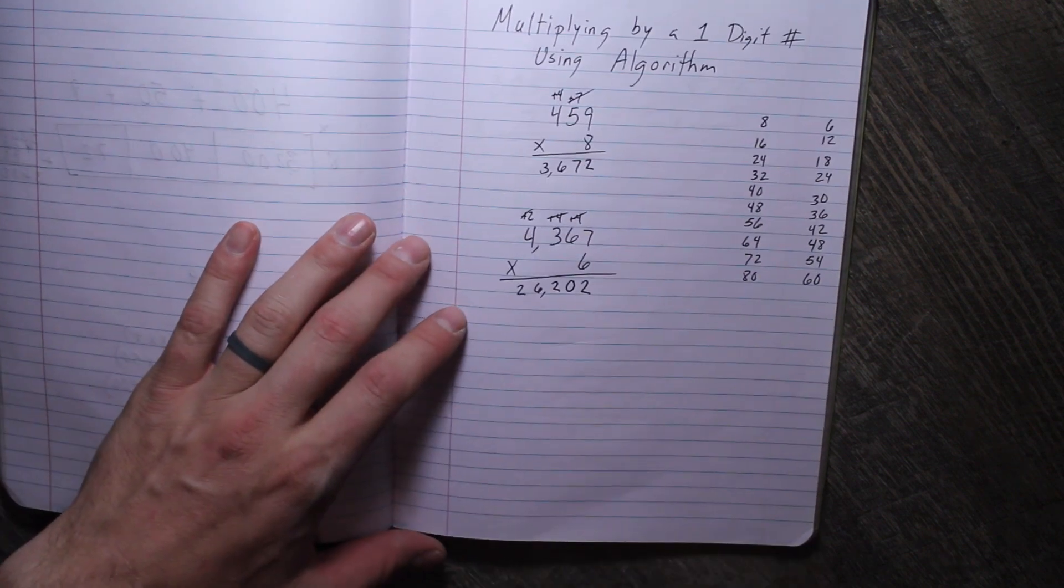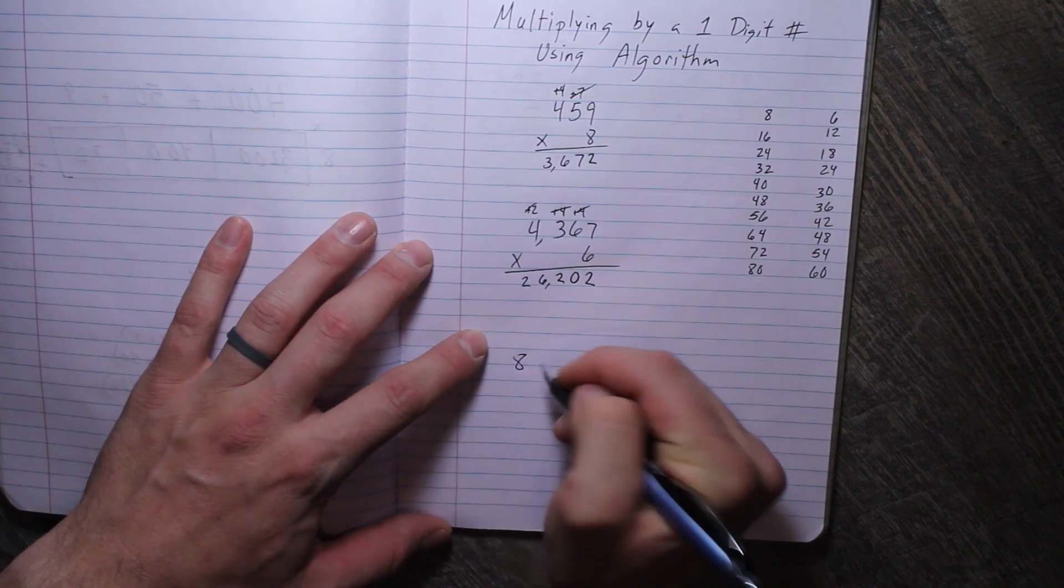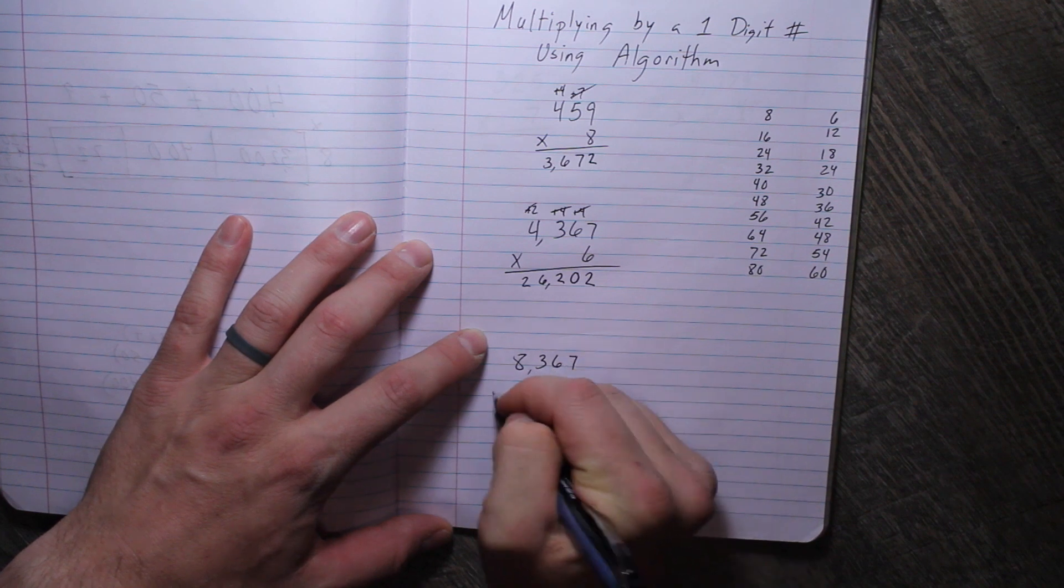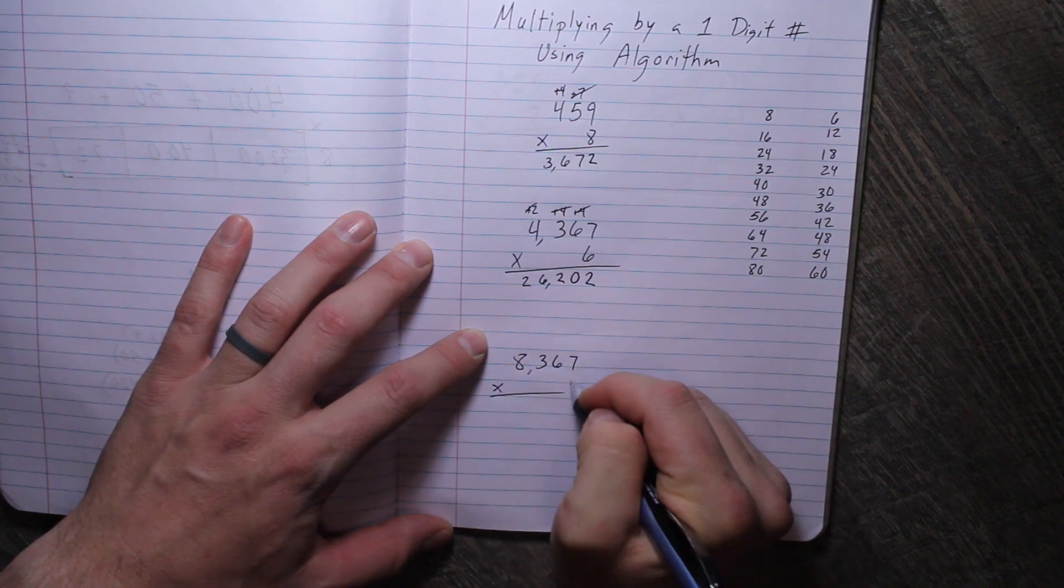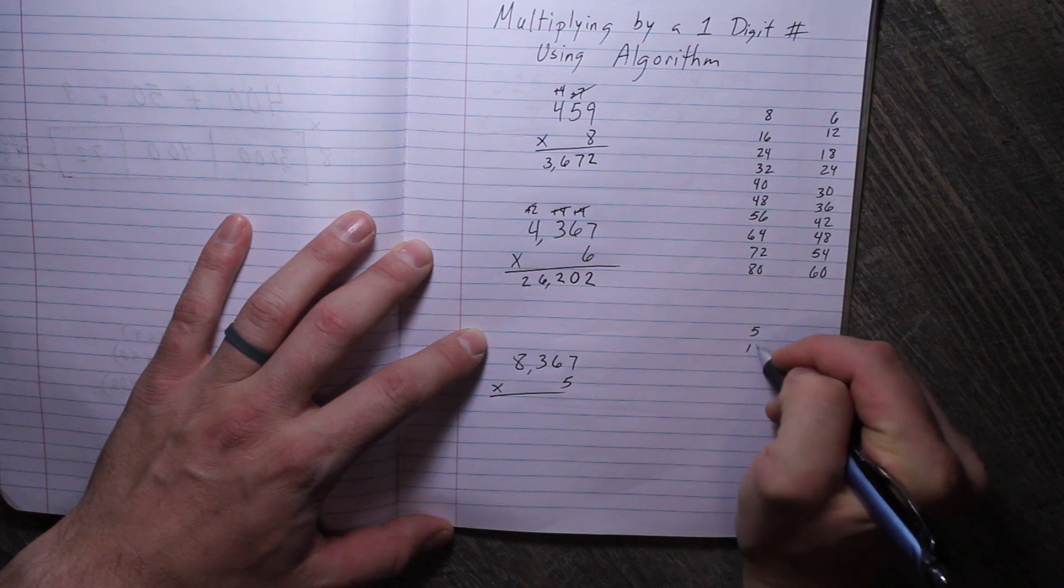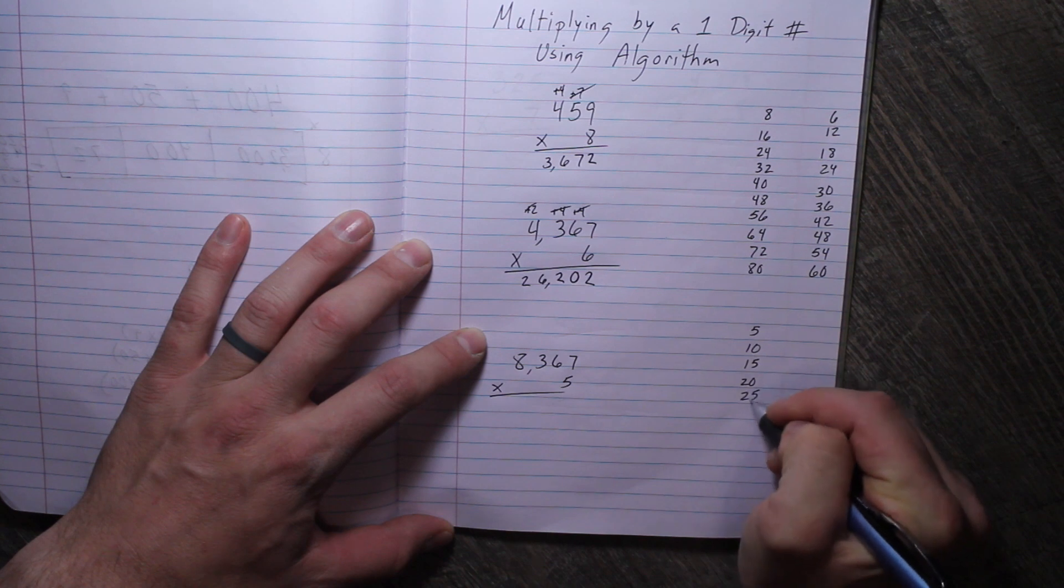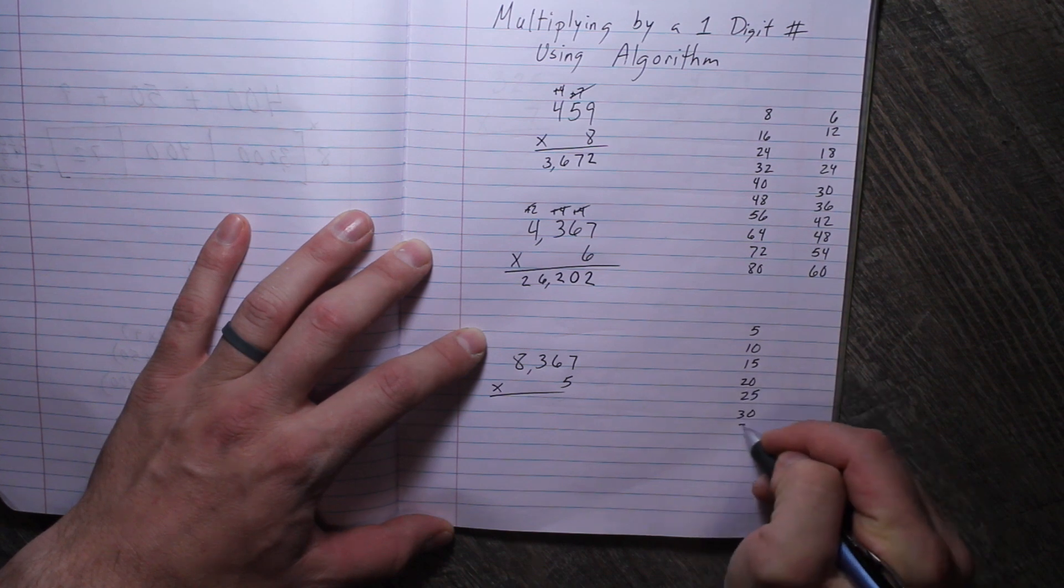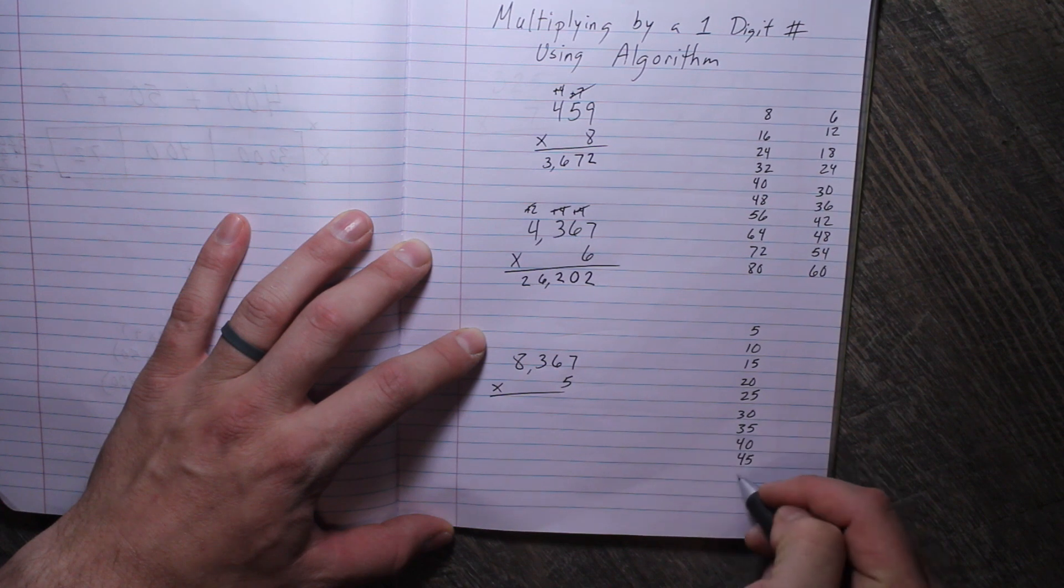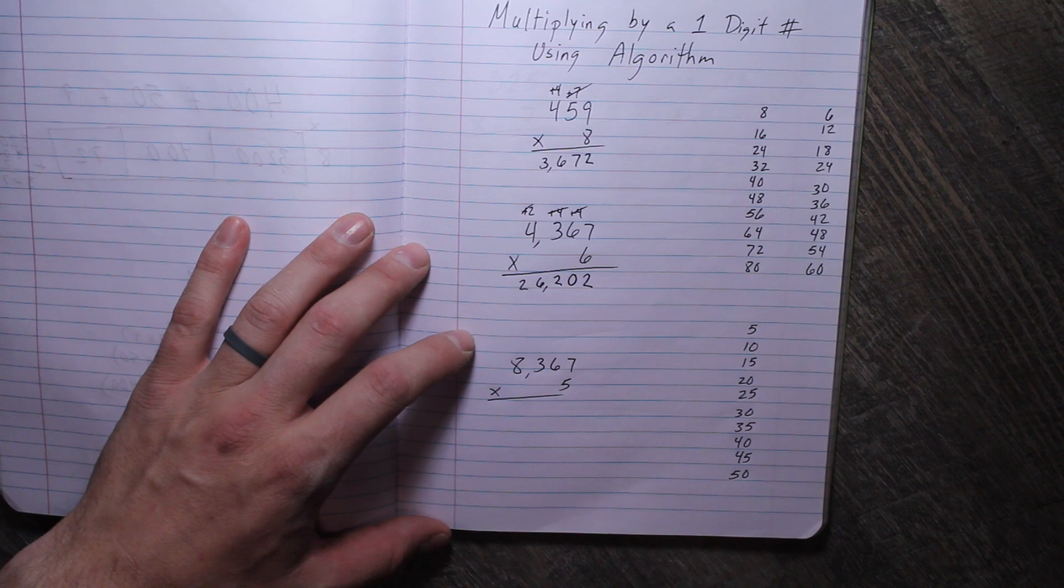Let's do one more. Let's do 8,367 times 5. If you don't know your multiples of 5, you can always write them to the side: 5, 10, 15, 20, 25, 30, 35, 40, 45, 50. So now I want you to pause the video and try to solve this one yourself before we do it together.